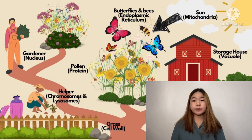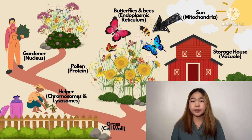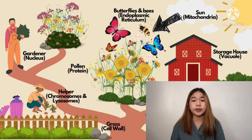Next, we have the butterflies and the bees. They are the ones who transfer pollen from one flower to another. This is like the endoplasmic reticulum, which transports materials that are needed by the cell.